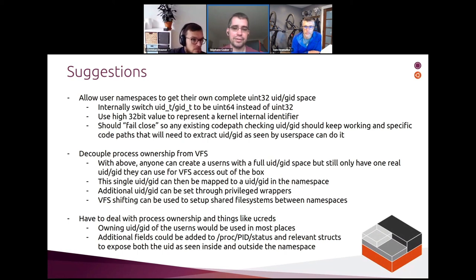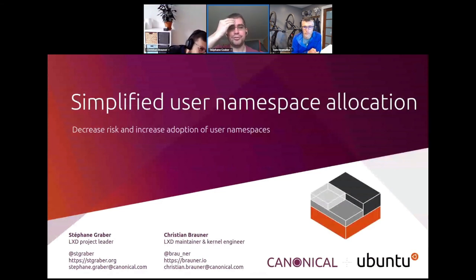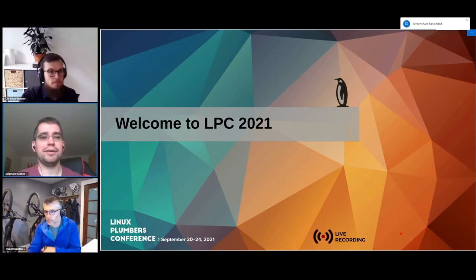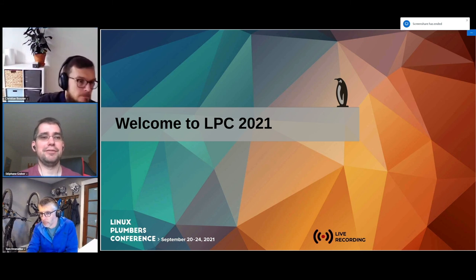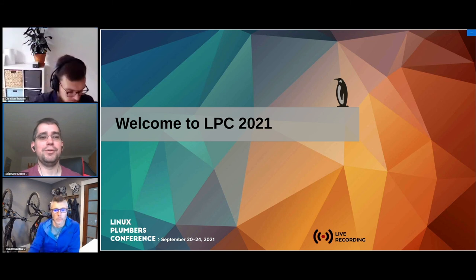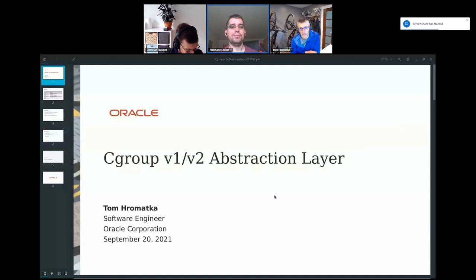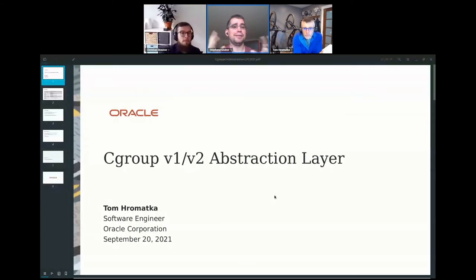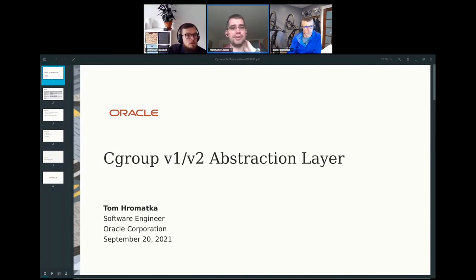Before switching to the next talk, the speakers noted their contact information is available for anyone wanting to discuss further. This is something they'll definitely be looking into more over the next few months. It's not an immediate blocker for current work, but it could be very good for adoption of user namespaces by making things easier — especially as more network authentication systems and init systems adopt UID/GID-based security features.